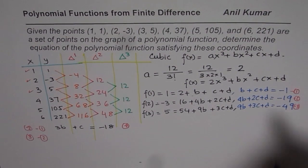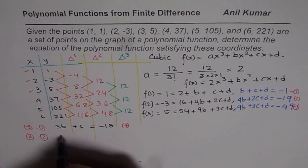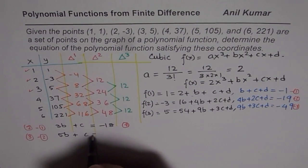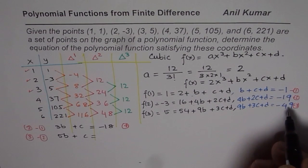Now let us do equation 3 minus 2. 9 minus 4 is 5. So we get 5b plus c equals -49 minus -19.